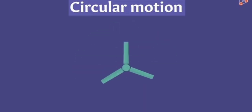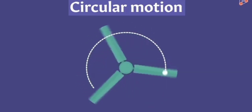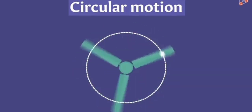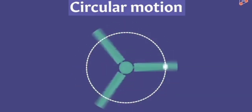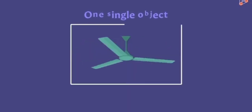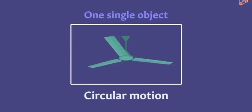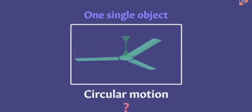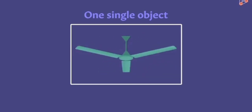What about a moving fan? If we consider only a point on one of its blades, when the fan is switched on that point moves in circles — so the blades are undergoing circular motion. But if we take the fan as a single whole object, can we say the fan as a whole is moving in circles? No, that would be incorrect — the fan as a whole is not going anywhere along the circumference of a circle.